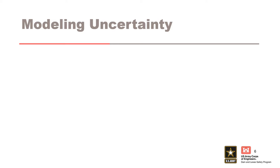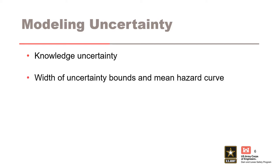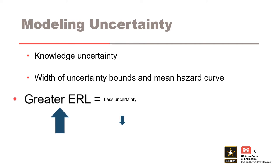Now that we have a general understanding of effective record length, let's discuss how it is used in a flood hazard analysis. The effective record length is used in many stochastic flood hazard models and risk analyses to model the uncertainty in the flow frequency curve. It is one of the required inputs for an RMC RFA model, and it directly affects the width of the uncertainty bounds and also the expected or mean flow frequency curve. The greater the effective record length, the less uncertainty we have in our flow frequency curve.